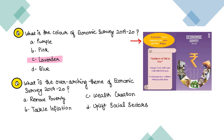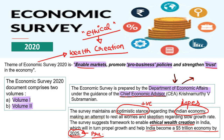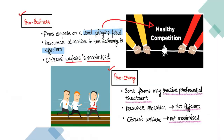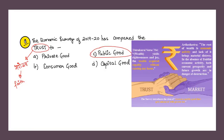What is the overarching theme of Economic Survey 2019-20? Options: remove poverty, tackle inflation, wealth creation, or uplifting social sectors. Correct answer is C — wealth creation. Next question: The economic survey compared trust to what — private good, consumer good, public good, or capital good? From the 10 new ideas: trust is a public good that increases with use. Correct answer is C — public good.